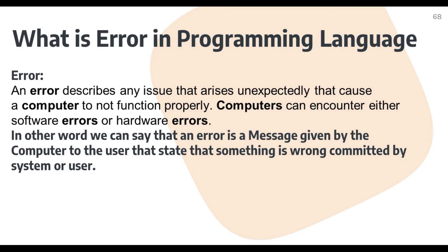So the first topic: what is error? An error is a message given to the user by the computer stating that something has gone wrong, committed by the system or user. Error can be generated through a user or by the system. In other words, an error describes an issue that arises unexpectedly — the computer is not functioning properly, or the program code is not working correctly. This can be a hardware error, software error, or a user error.